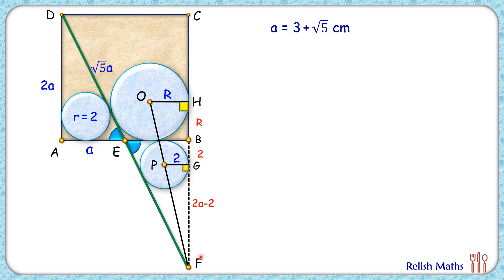Now here, let's assume this angle here is alpha degrees. Now in triangle PGF and triangle OHF, they both have got alpha degree angle and 90 degree angle, and thus these two triangles are similar to each other. Thus the ratio of their sides will be equal.